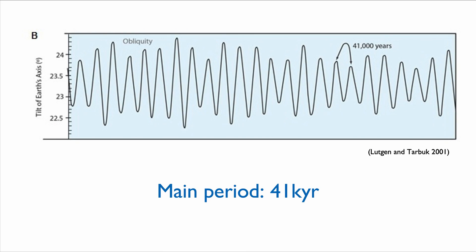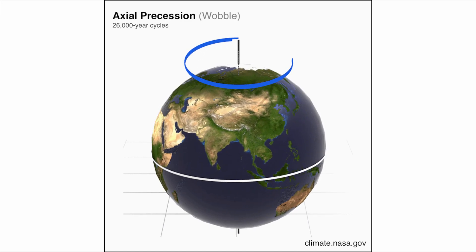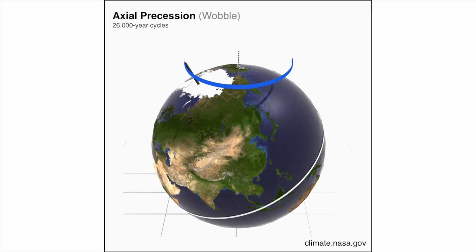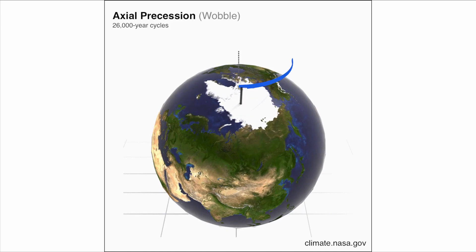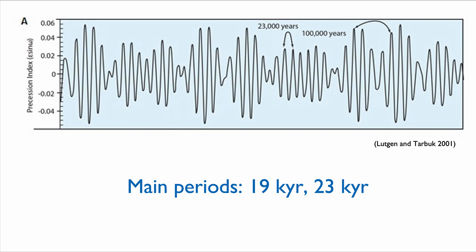The last Milankovitch parameter is precession — the wobble of the Earth's axis. This implies that it's not always the same side of the Earth pointing towards the sun during winter and summer, so it has implications for seasonality: how hot the summers are and how cold the winters are, and potentially how much ice can be preserved at the poles. The main frequencies for precession range from 19,000 to 23,000 years. There is also a 100,000-year frequency, which is essentially four of the 23,000-year cycles modulated by eccentricity.